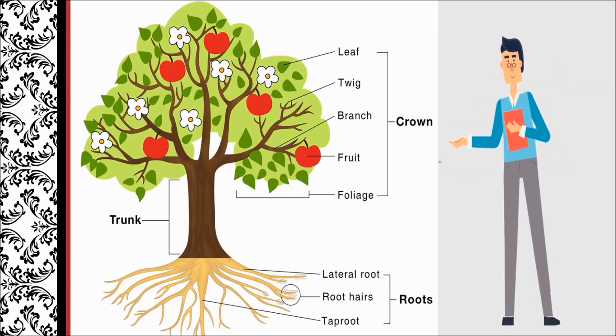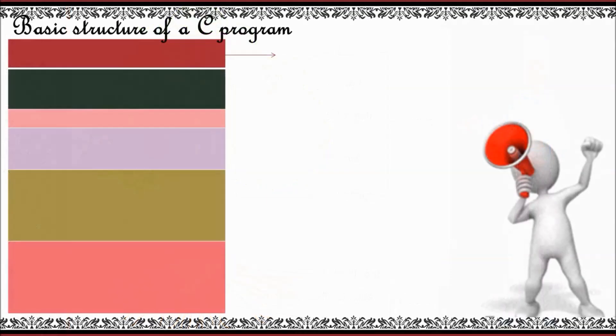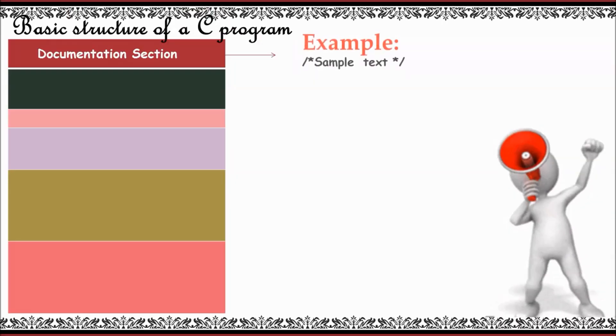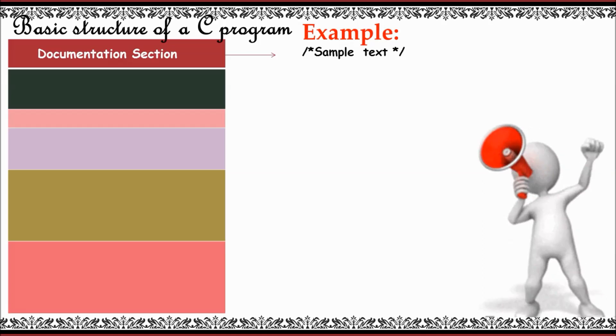It first consists of a section called documentation section. In this section we write certain comment lines. Comment lines start with slash asterisk, we'll be typing some sample text, and then end with asterisk slash. It contains the basic details regarding the program.